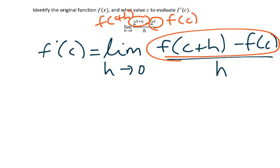By looking at that, I can see that the original function f(x) is 2 to some exponent, 2^x. I know that because if I were to replace the x with 5, that would give me 2^5, which is f(c).